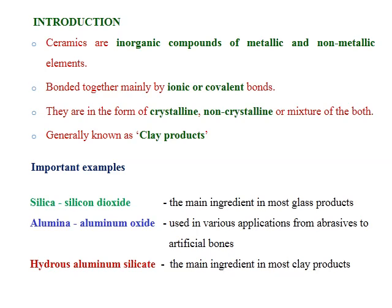Some important examples are silica — silicon dioxide — the main ingredient in most glass products; alumina — aluminium oxide — used in various applications from abrasives to artificial bowls; and hydrous aluminium silica, the main ingredient in most clay products.